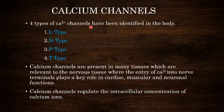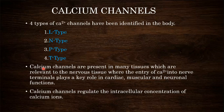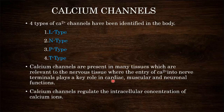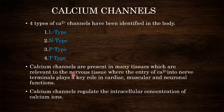There are 4 types of calcium channels identified in the body: L type, N type, P type, and T type. These calcium channels are present in many tissues relevant to the nervous tissue, where the entry of calcium into nerve terminals plays a key role in cardiac, muscular, and neuronal functions. These calcium channels act as gates for the influx and outflux of calcium.